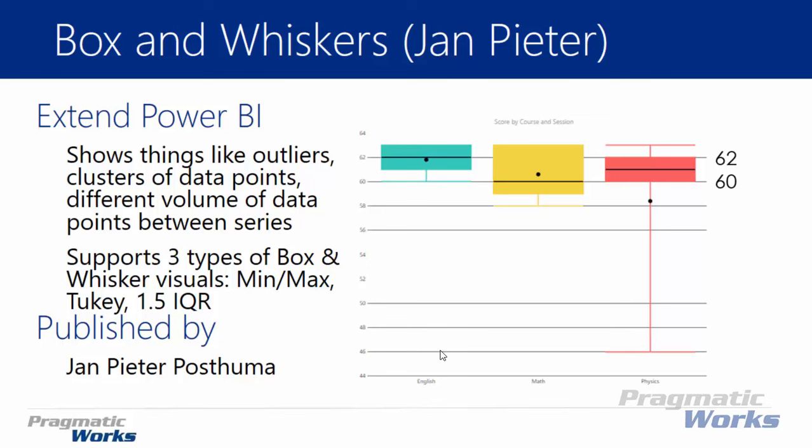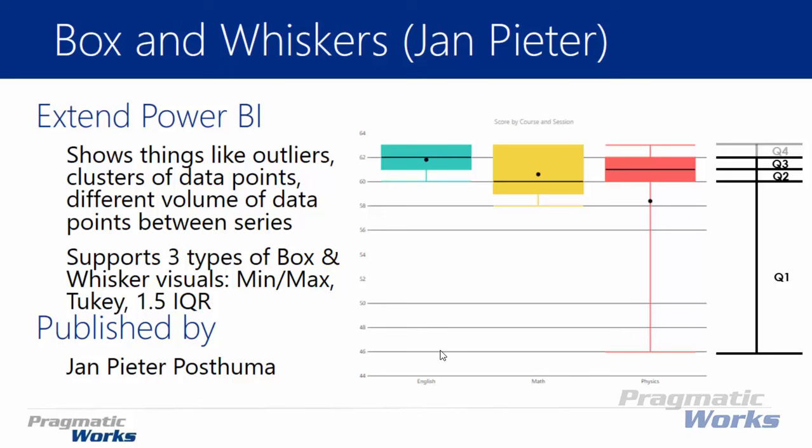For example, 60 and 62 are the median values we see — 60 for the lower half and 62 for the upper half. So it's really breaking the values up into quarters, called quartiles. Quartile one goes from the very bottom of the whisker to the beginning of the box. Quartile two goes from the beginning of the box to the median. Quartile three goes from the median to the top of the box, and quartile four goes from the top of the box to the top whisker.